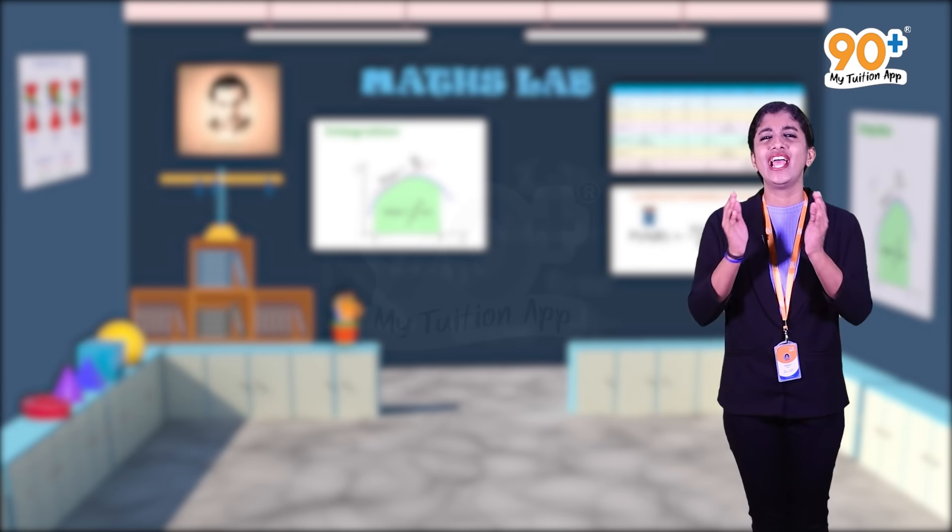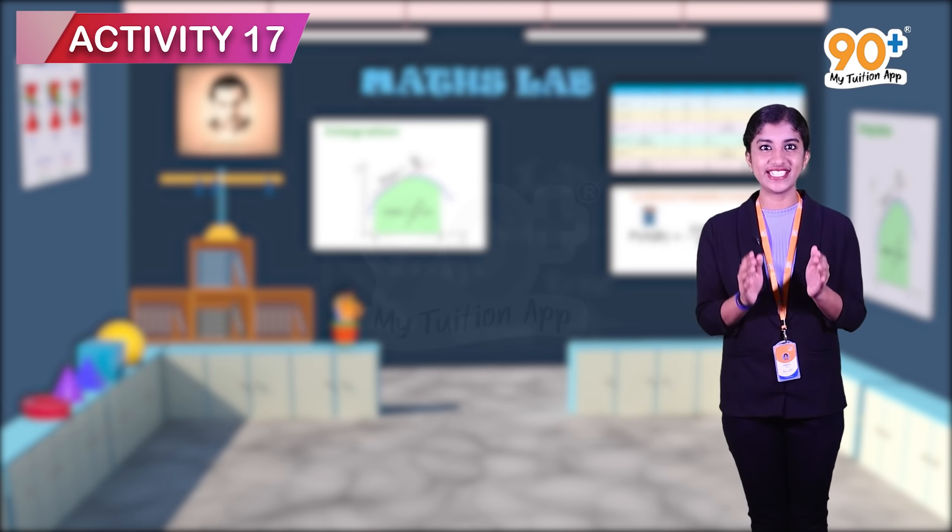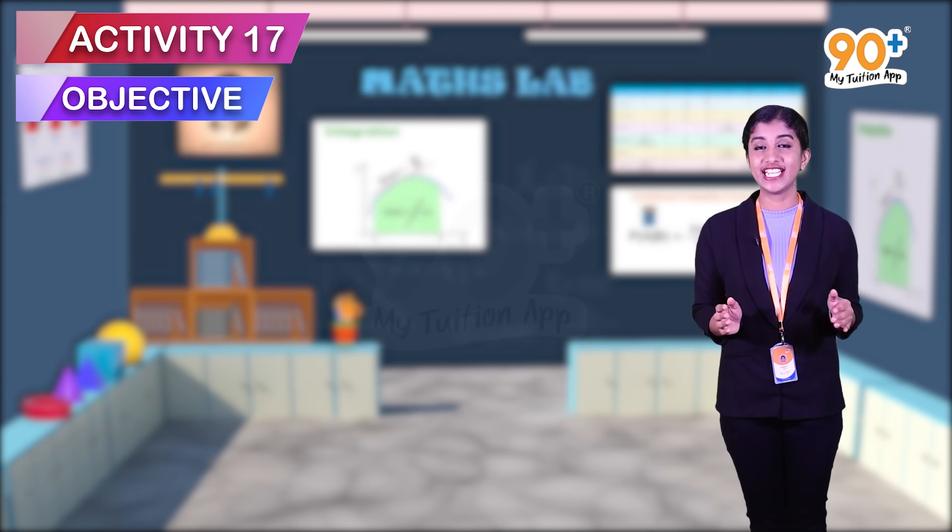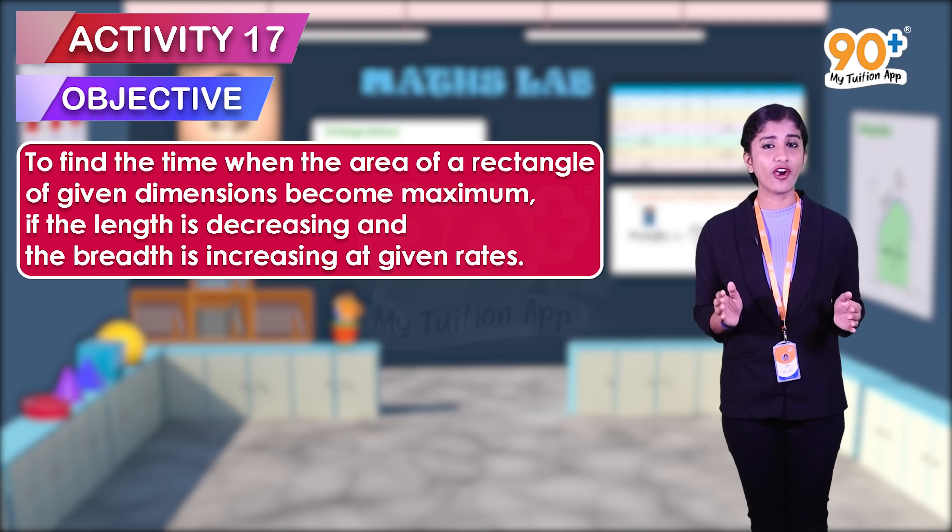Hello friends, welcome to the virtual lab of 90 Plus My Tuition App. Let's do an interesting activity, Activity Number 17. Let's see the objective of this activity. The objective is to find the time when the area of a rectangle of given dimensions becomes maximum.